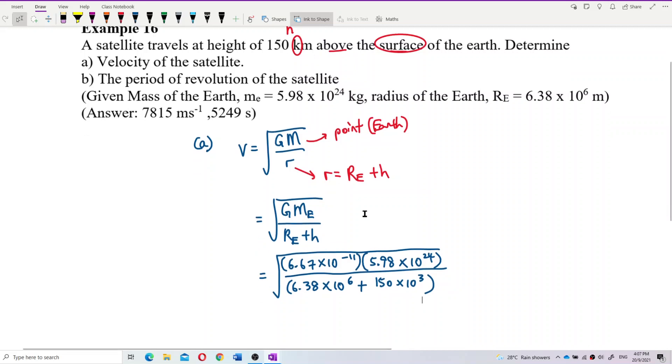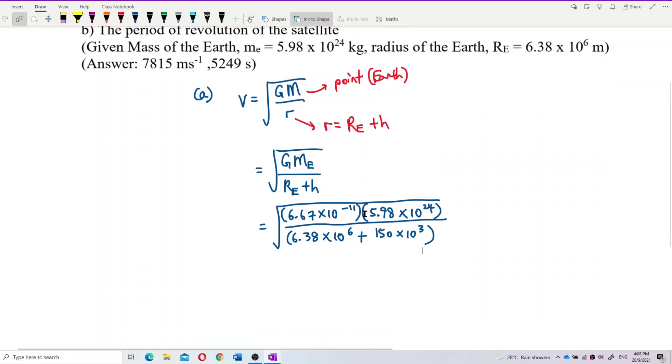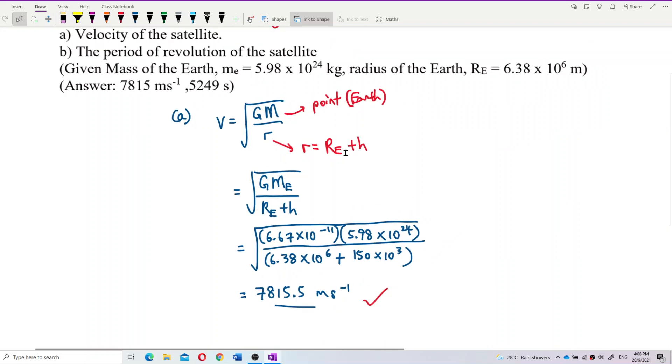Let's calculate. So the answer I get is, let me look at the answer. What's the answer? So the v is 7815.5 meter per second. Is that correct? Yes, it's correct. 7815. That's correct. That's the velocity of satellite.